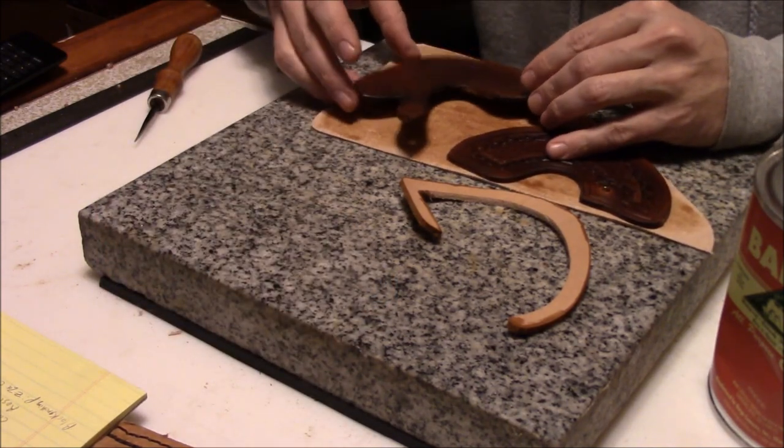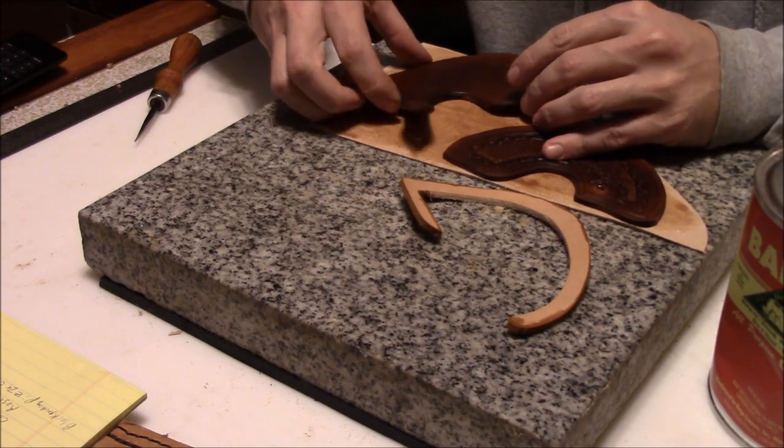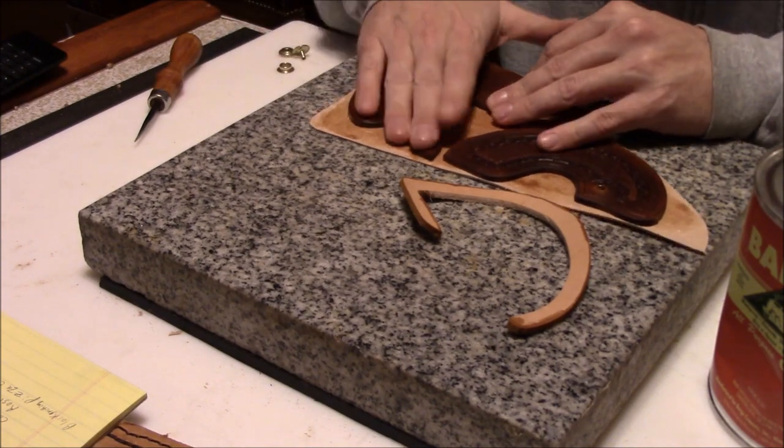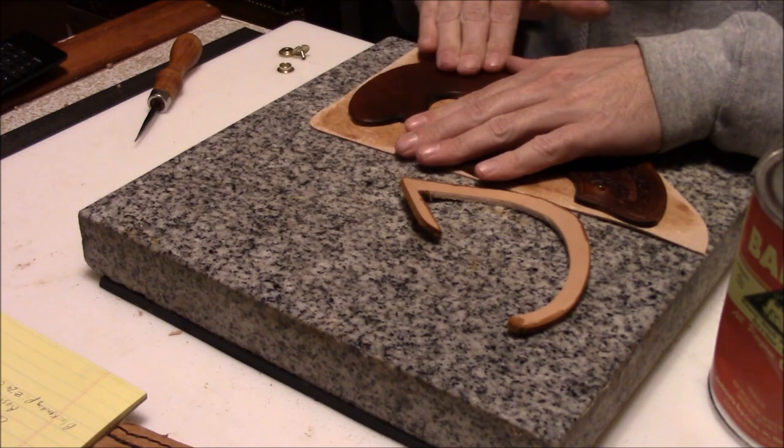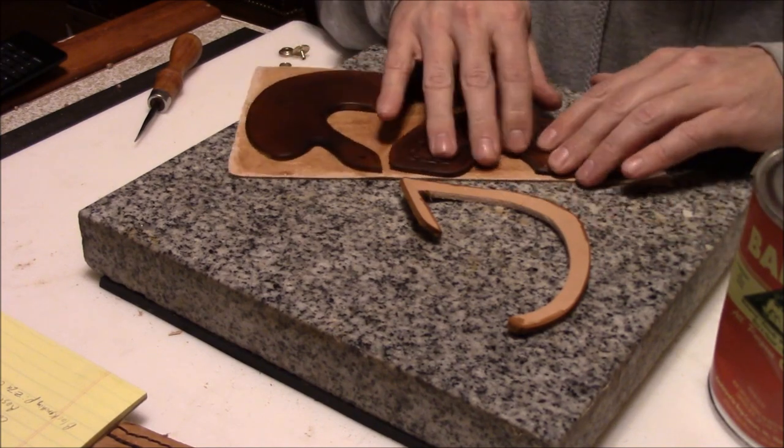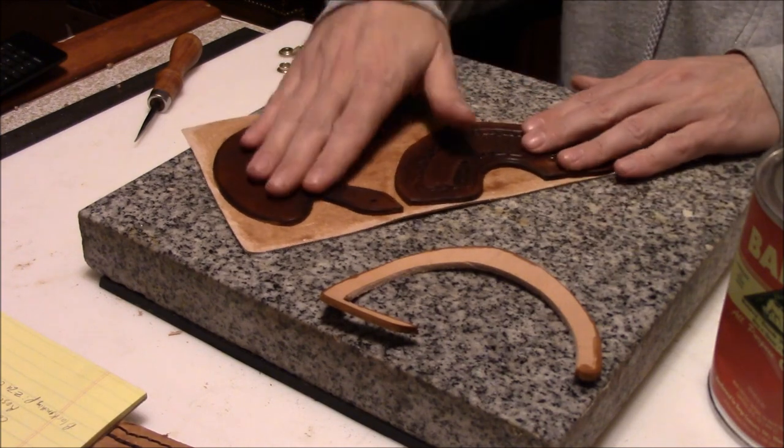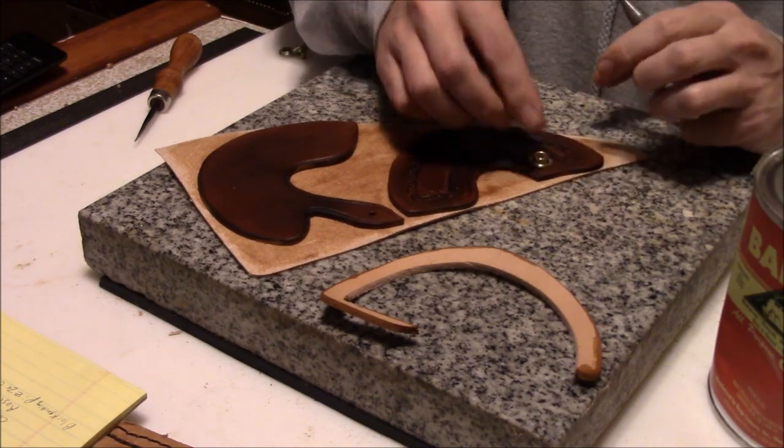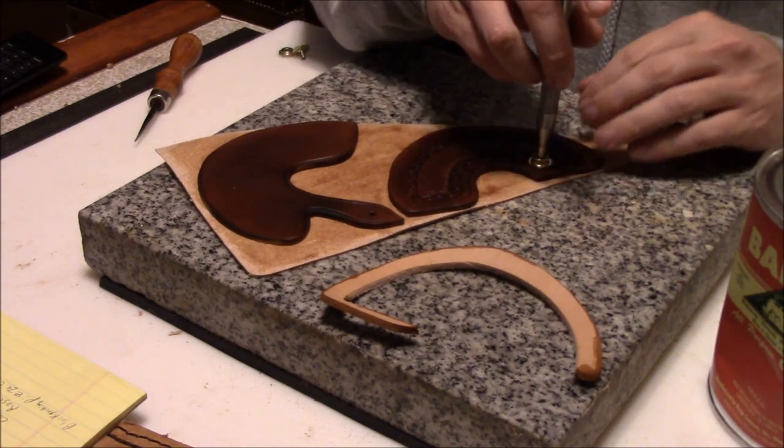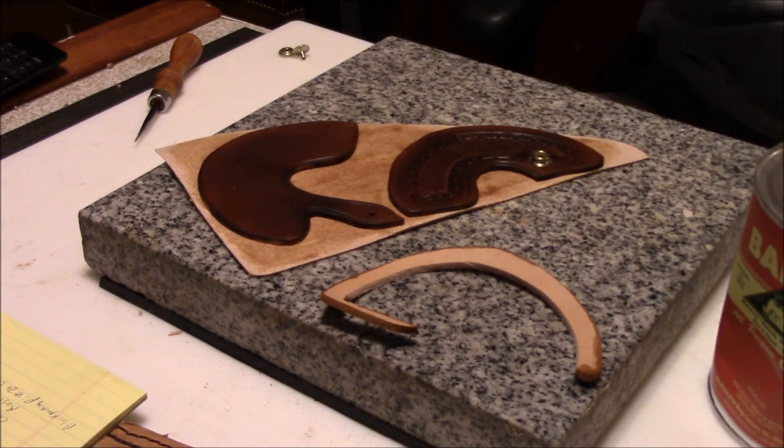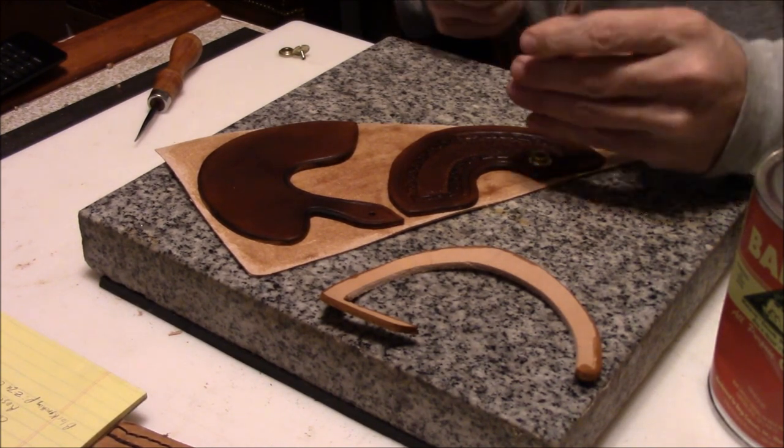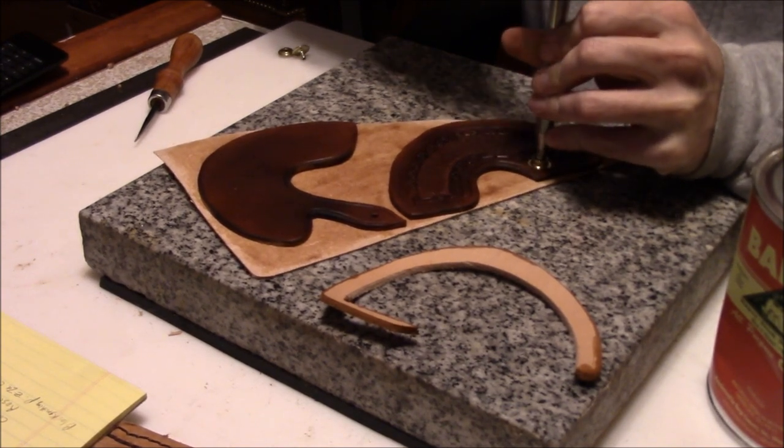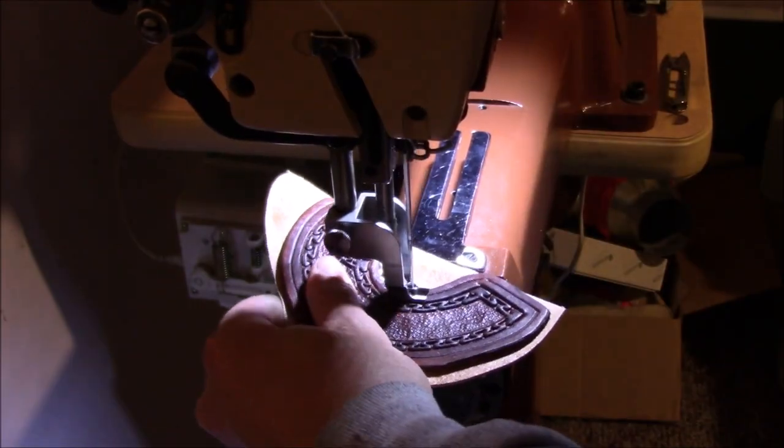Now on the tab that the closure snap goes on, that one you need to punch through the lining as well. So we're just gonna go ahead and glue it down, put the snap in later. But we don't want that snap inside the sheath to be coming through the leather so we don't scratch up our blade. The snap is softer than the steel of the blade, but it will leave a mark on it eventually.